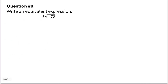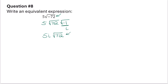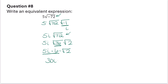In this problem I would ask you to write an equivalent expression. Notice we have a negative radicand. I'm going to rewrite this as an imaginary number: 5 square root of 72 times the square root of negative 1. The square root of negative 1 becomes i, so I can write this as 5i times the square root of 72. I can simplify: 5i times the square root of 36 times the square root of 2. The square root of 36 is 6, so this is 5i times 6 times the square root of 2, which simplifies to 30i square root of 2.